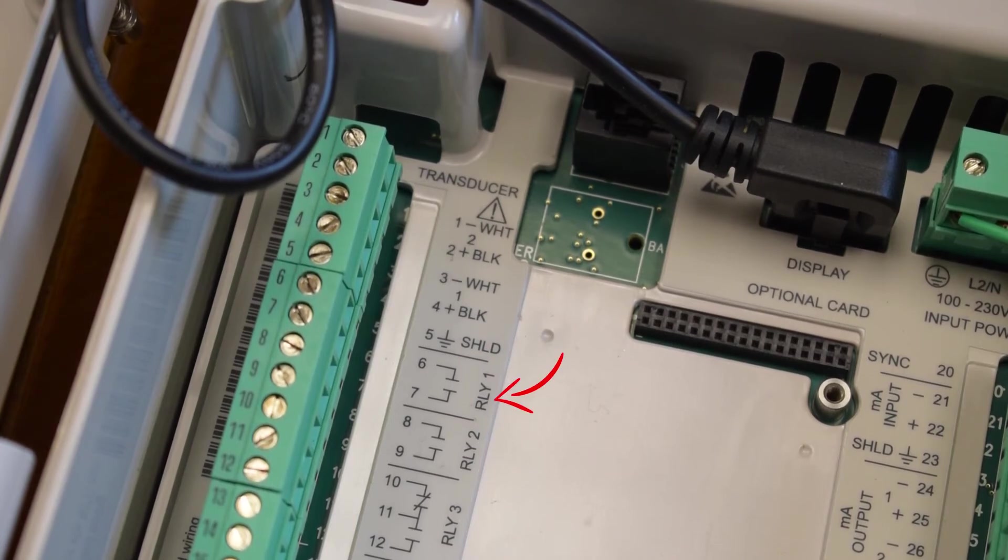Relay 1 uses terminals 6 and 7. Relay 2 uses terminals 8 and 9. Relay 3 is a form C contact and uses terminals 10, 11, and 12.